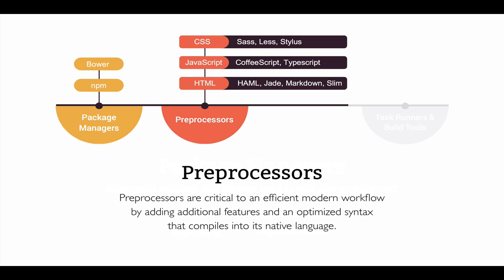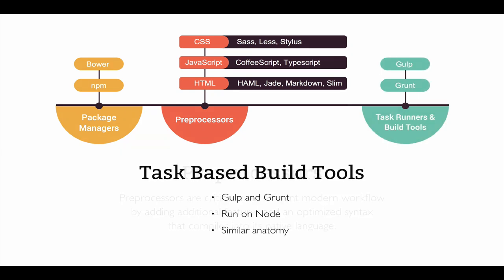You've probably already been working with pre-processors, so this is a familiar one. Things such as Sass and Less on the CSS side; on the JavaScript side we've got CoffeeScript and TypeScript; and examples with HTML would be Haml, Jade, Markdown, and Slim. Pre-processors are critical to an efficient workflow — they add features and optimize syntax that compiles into its native language. You're probably already using these and are familiar with how they work.